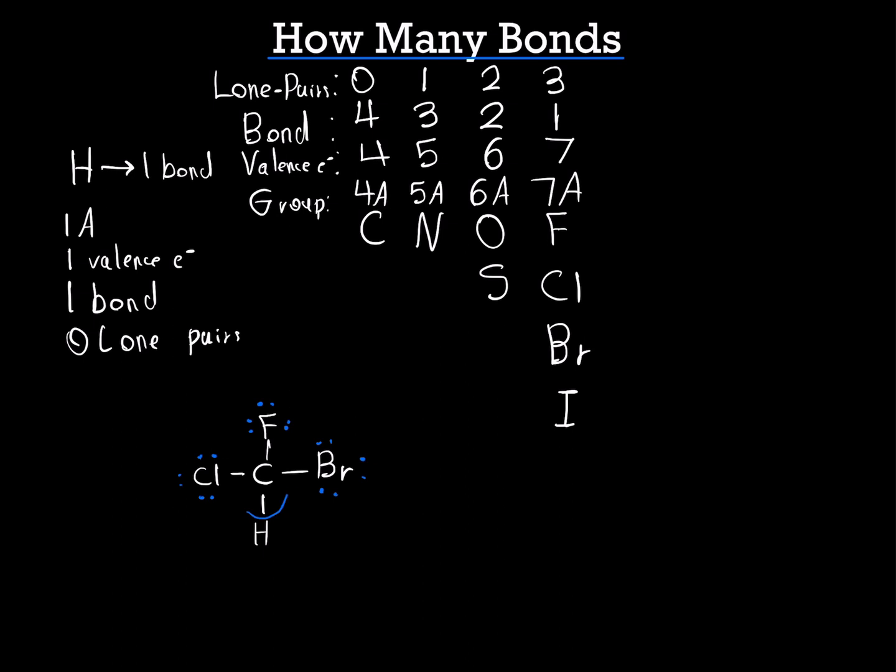Now carbon has 2 electrons per bond. So 1, 2, 3, 4, 5, 6, 7, 8. It has its 8.